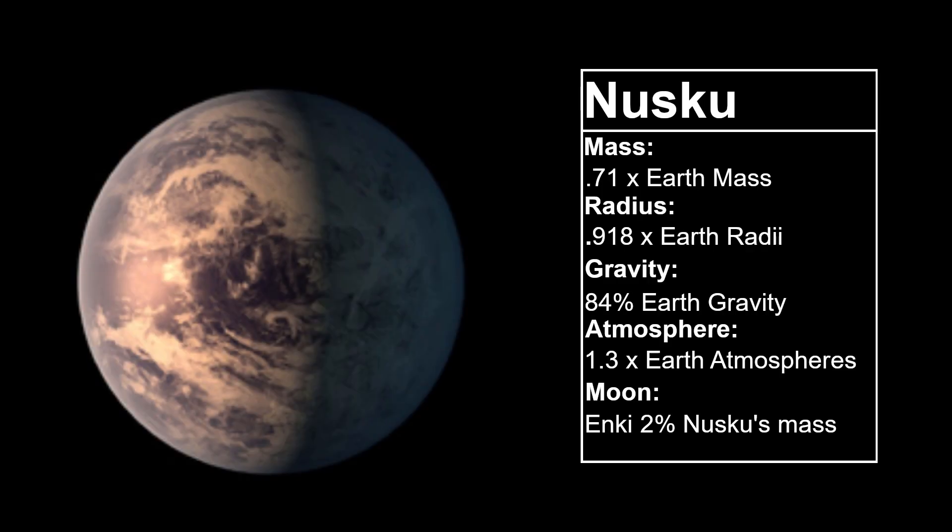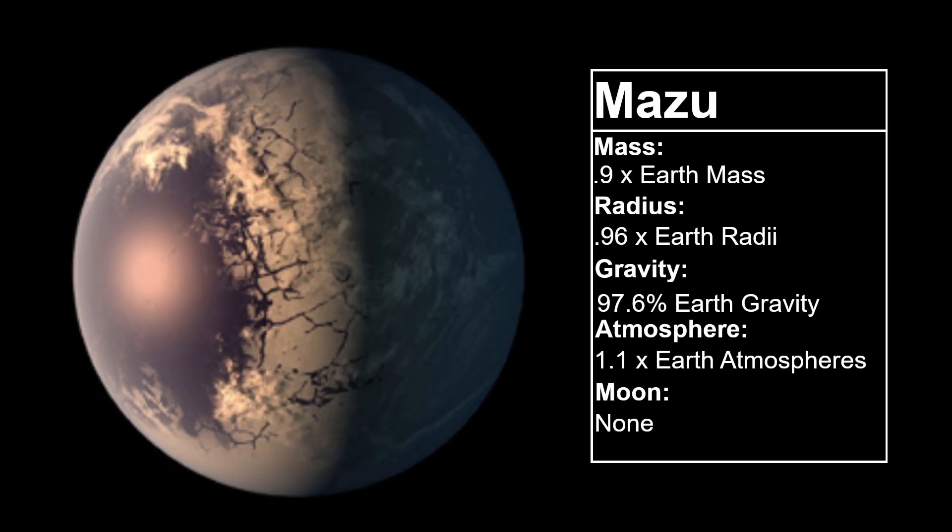The last two seasons of this series have focused entirely on Nusku, the closest habitable planet to the fictional star Roseus. Season 3 will be focused on Mazu, the second habitable planet in the Roseus system.